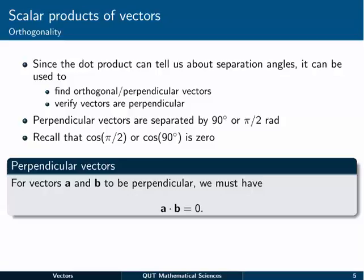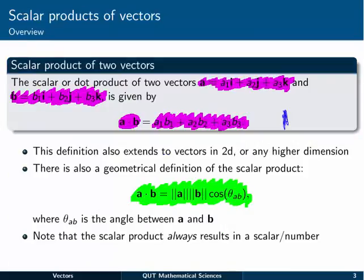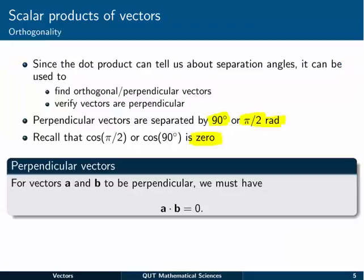To see this, we need to remember that perpendicular vectors are separated by an angle of 90 degrees or pi on 2 radians. Now remember that the cosine of pi on 2, or cos of 90, is equal to 0. So for vectors a and b to be perpendicular, we must have that their dot product is equal to 0, because in the geometric form we would have cos of 90 degrees or cos of pi on 2 equal to 0, and the whole right hand side of the green formula would be 0.